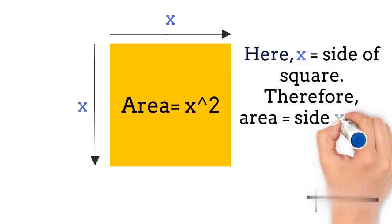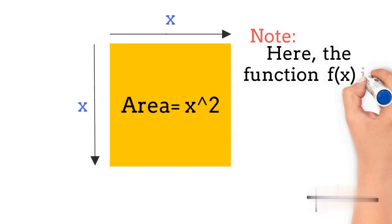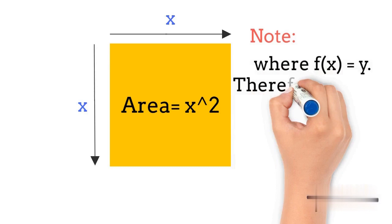Also, we know the area of square is given by its side square. Therefore, we have x square as the area of this square. In this plane the function f(x) is the area of the given square. That means function f(x) is equals to area of square. Previously we have seen that f(x) is equals to y. Therefore we can say y is equals to the area of square.